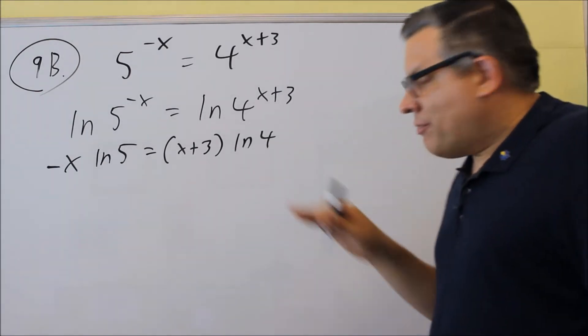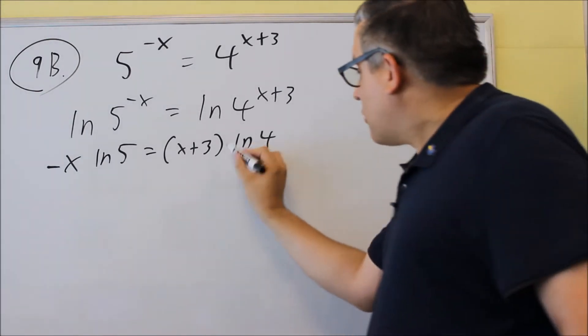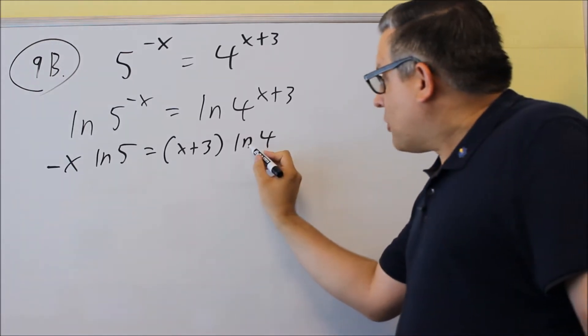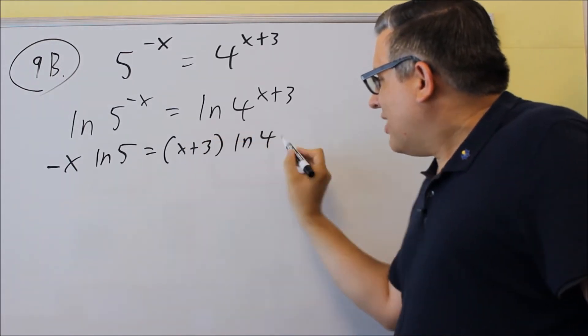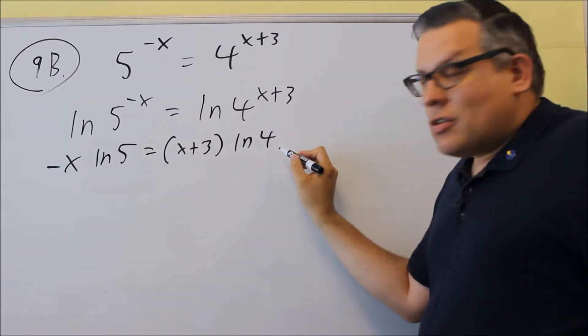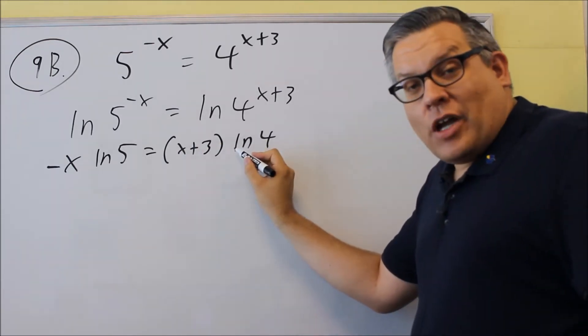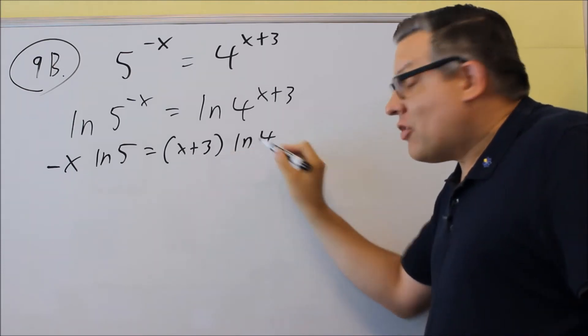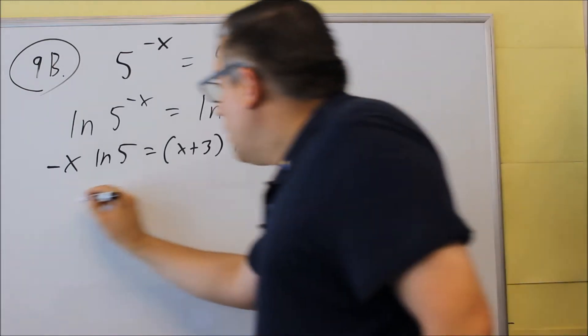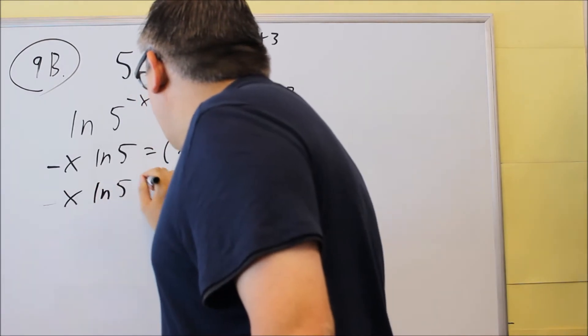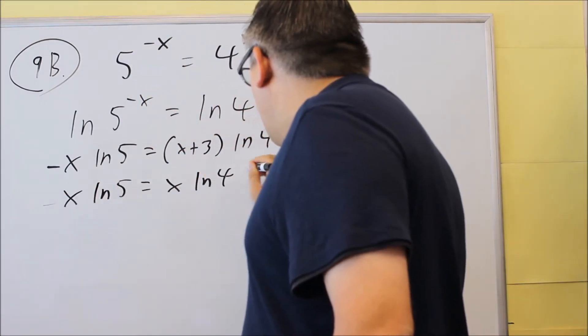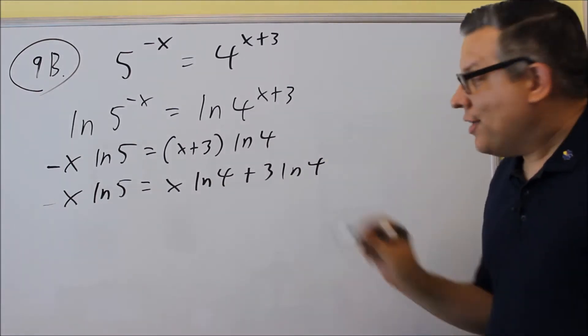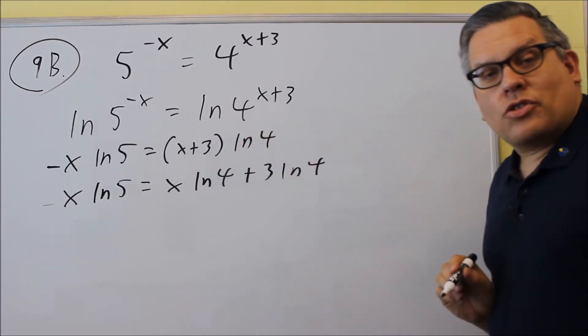Now, we want to expand this. So we're going to multiply both of these by ln 4. Remember that when you multiply ln 4 times x, it doesn't become 4x. The x actually has to remain out in front. Same with the 3. The 3 will remain out in front. You can never multiply and change anything inside the ln. So negative x ln 5 will equal x ln 4 plus 3 ln 4. So we're just going to distribute ln 4 into each of those in the parenthesis.